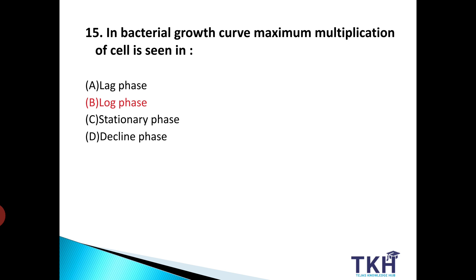And our answer is Option B: Log phase. Bacterial growth curve में 4 phases आते हैं — lag phase, log phase, stationary phase, and decline phase. Lag phase में कोई multiplication नहीं होती, bacterial cells सिर्फ prepare करते हैं। Log phase में maximum multiplication दिखाई देती है bacterial cells की। Stationary phase में bacteria की death rate और birth rate दोनों equal होती हैं। और decline phase में bacterial cells की death होनी start हो जाती है, जिस वजह से उनकी number कम हो जाती है।